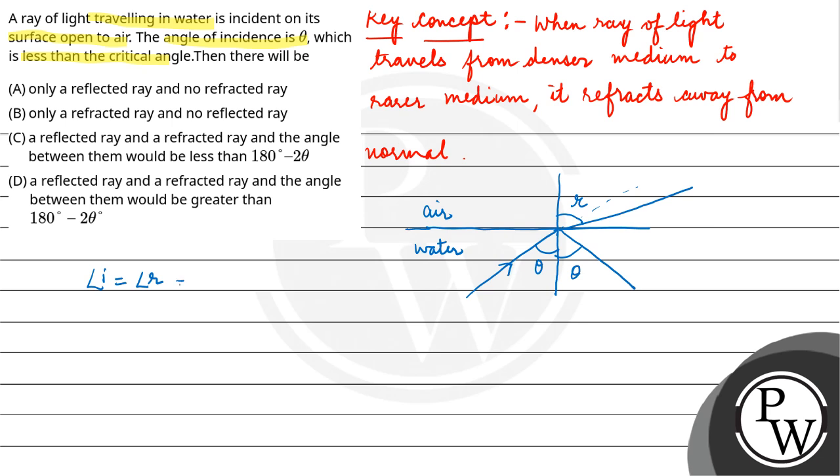That means both are theta. This is angle of refraction r. Let's say this is r dash. r dash is angle of refraction.